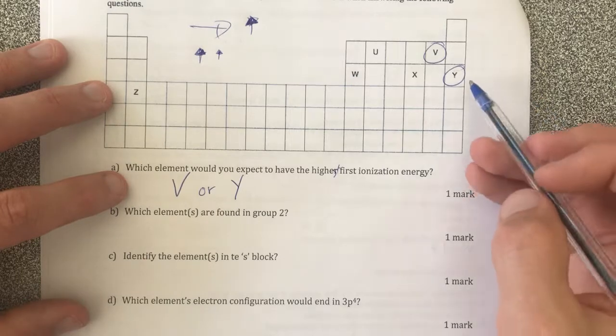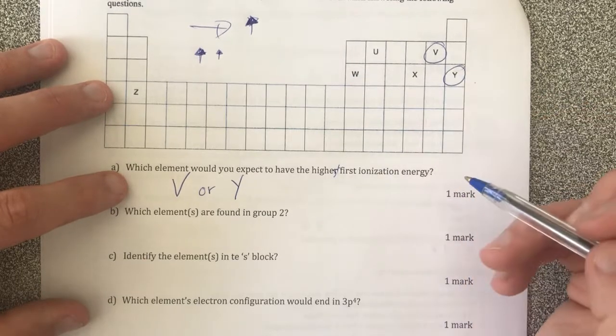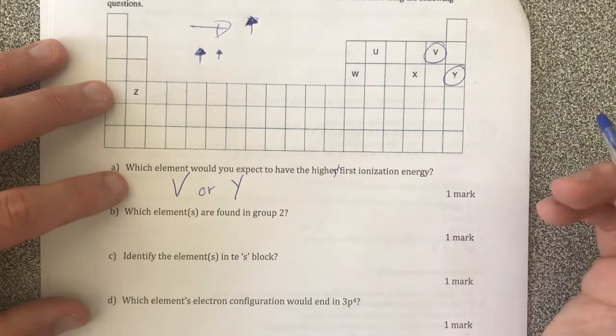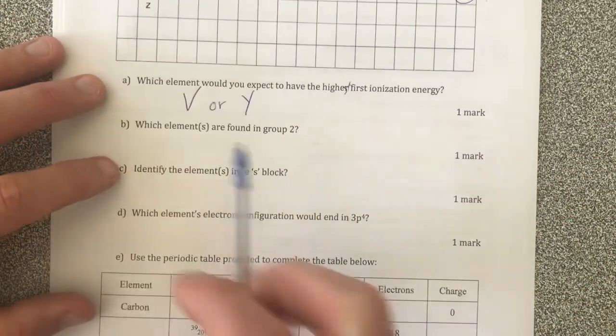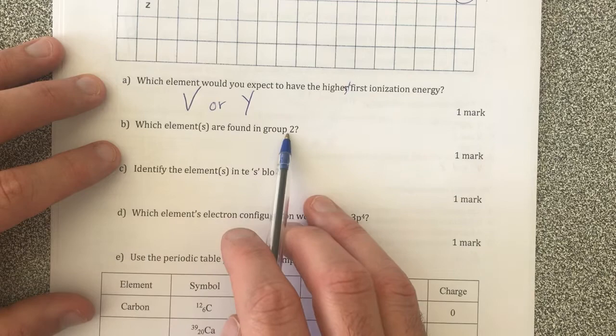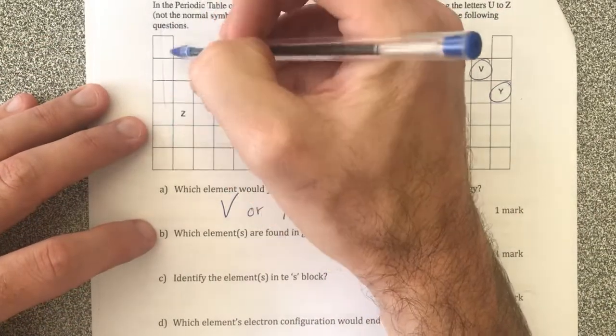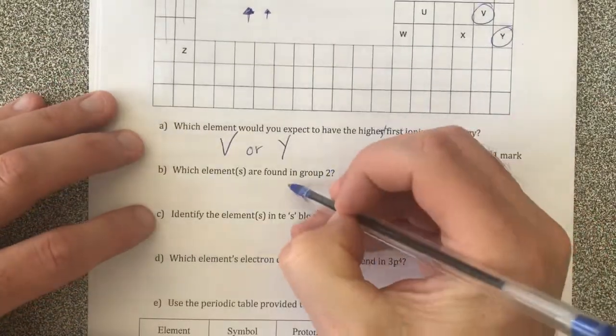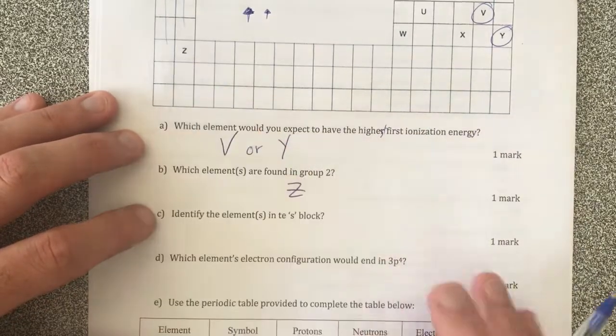So therefore I'm gonna toss up between these two and I'm actually not a hundred percent sure, I'll actually need to Google that. But moving on. Which elements are found in group 2? Group 2 of our periodic table, groups are our vertical columns, so therefore Z will be found in group 2.